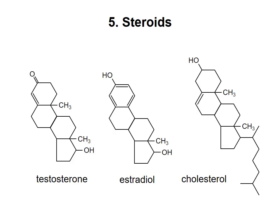The fifth class of lipids I want to mention are steroids. Steroids are characterized by a system of four connected rings, three with six carbons and one with five. Many steroids, such as testosterone and estradiol, are hormones, but cholesterol is a component of membranes.